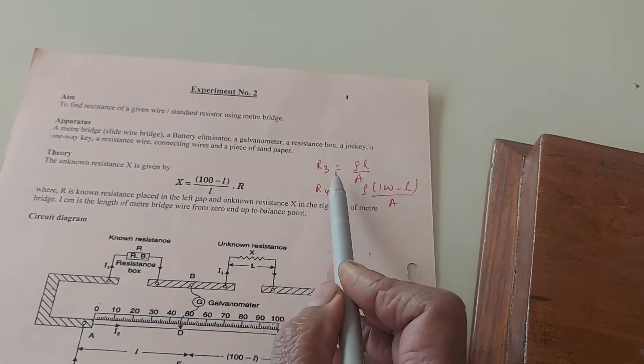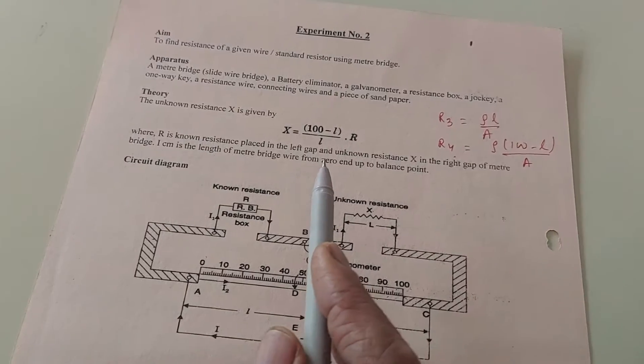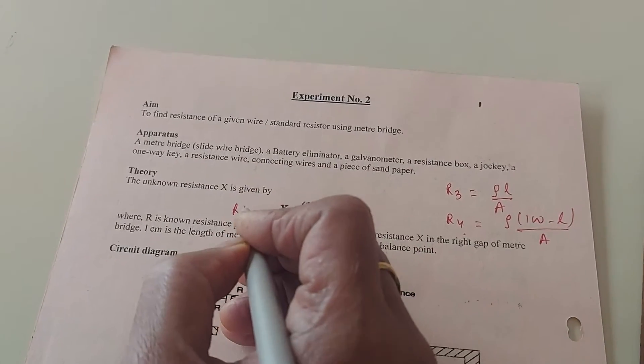So when you put these values, the ratio R4 by R3 will be 100 minus L by L. That is what I am using to find the unknown resistance X for R2.